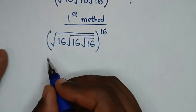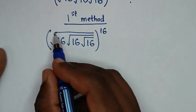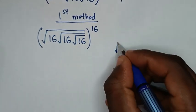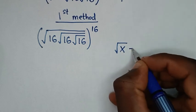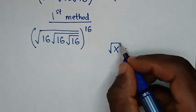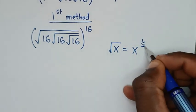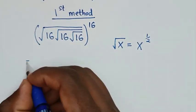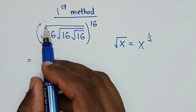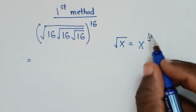In the first step, from this outer square root, we'll apply the rule. We know that square root of x is equal to x to the power of a half. So, from this outer square root, we'll change it into power of a half.